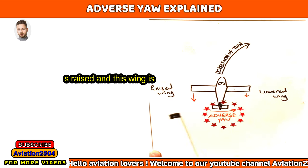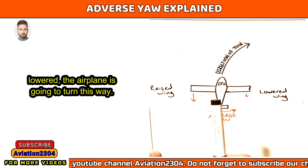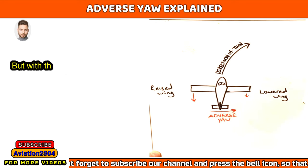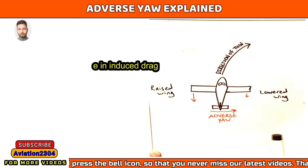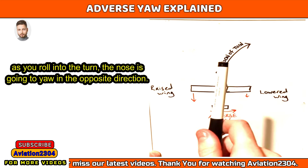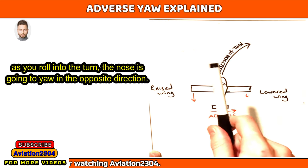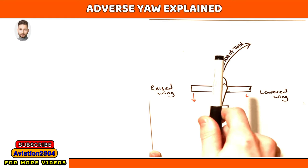So if this wing is raised and this wing is lowered, the airplane is going to turn this way, but with that difference in induced drag as you roll into the turn, the nose is going to yaw in the opposite direction.